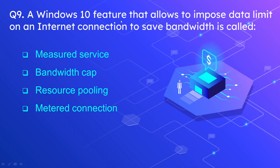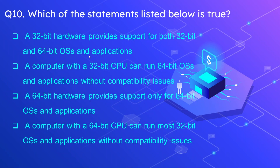Question number 9: a Windows 10 feature that allows you to impose a data limit on an internet connection to save bandwidth is called? The options are measured service, bandwidth cap, resource pooling, and metered connection. The correct answer is metered connection. This option is available inside the internet or network settings in Windows 10.